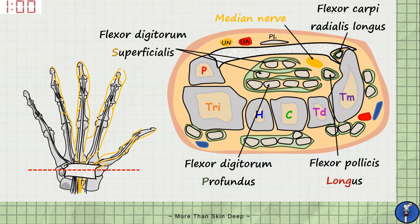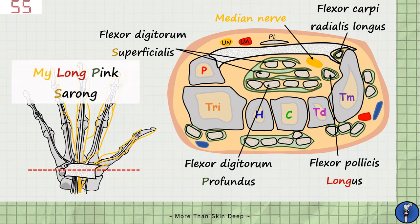To help us remember the structures that pass through the carpal tunnel, we can use the mnemonic 'My Long Pink Sarong,' with M for median nerve, 'Long' for flexor pollicis longus, 'Pink' for flexor digitorum superficialis, and 'S' for flexor digitorum profundus. I couldn't think of many S words to rhyme with 'long,' but if you can come up with anything better, leave it down in the comments.